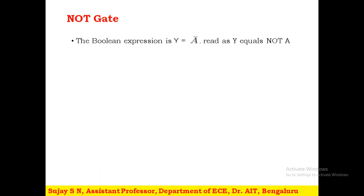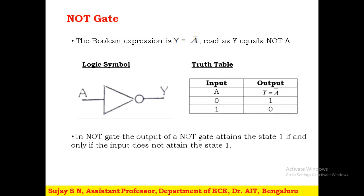NOT gate, as the name itself says, NOT of the input will be the output. The Boolean expression for NOT gate is Y = Ā, read as 'NOT of A' or 'complement of input A.' This NOT gate has a single input A and a single output Y. In the symbol you can observe a triangle; at the output there is a bubble, which indicates the complement of that input. In the truth table, if input A is 0 the output is 1, and if input is 1 the output is 0 — exactly the complement of the input.